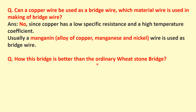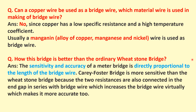How is this bridge better than an ordinary Wheatstone bridge? The sensitivity and accuracy of the Carey-Foster bridge are directly proportional to the length of the bridge wire. In the Carey-Foster bridge, two extra resistances are added from the resistance boxes, which virtually increases the effective bridge wire length. That is why it is more accurate and can measure slightly lower resistances compared to the meter bridge.